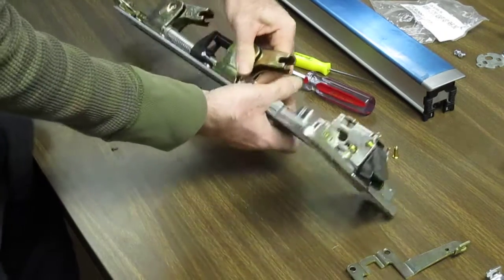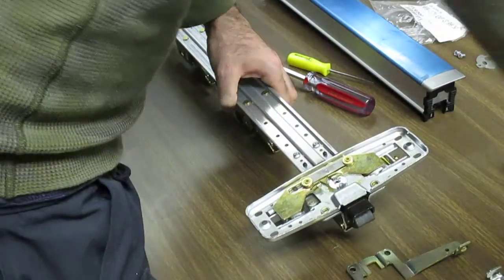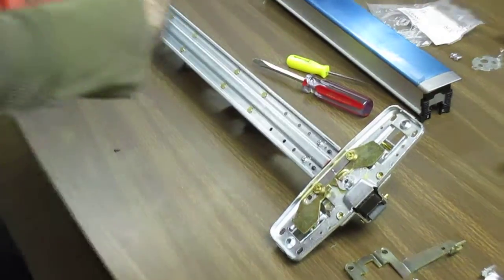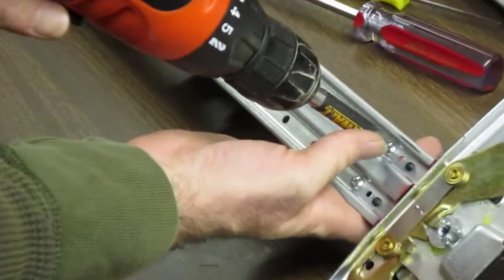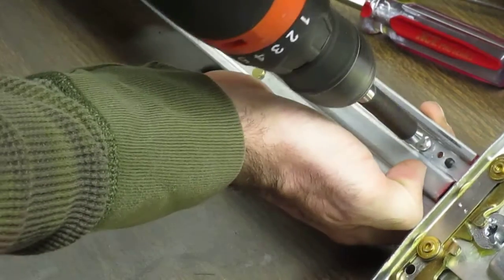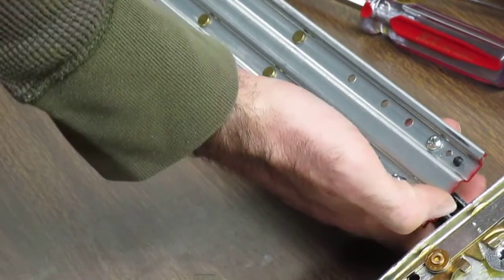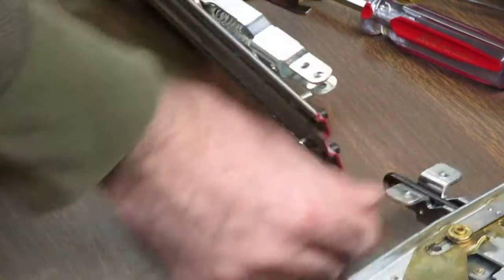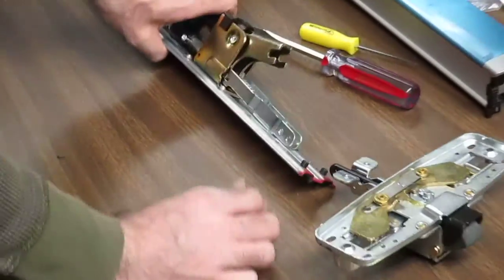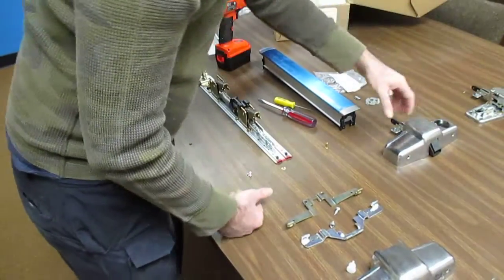Now to detach the screws on the back side of the device, you have to use a number two drill bit or screwdriver, whatever your preferability is. Once those are removed, it is now free. So that's done away with.